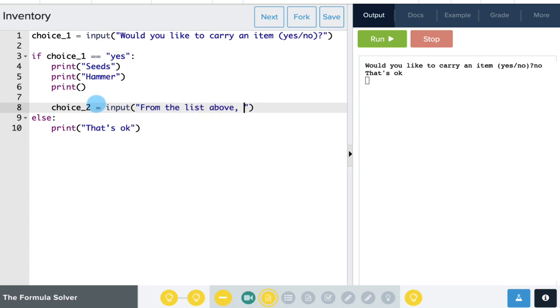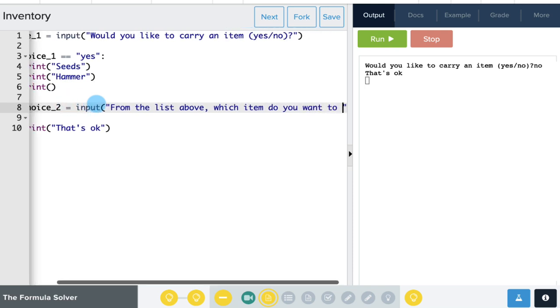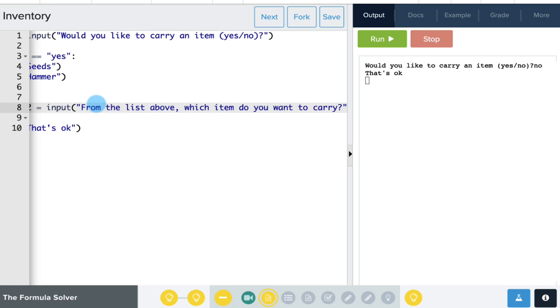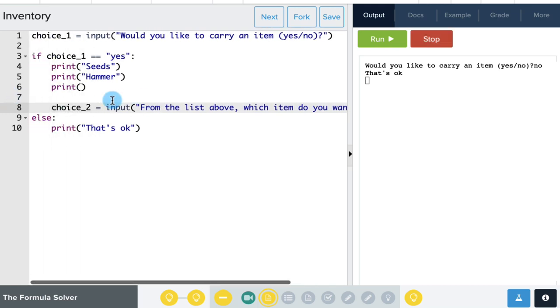So with choice two, the user will respond to the following question: From the list above, which item do you want to carry? Okay, so the user will then look at the list above, which is seeds and hammer, and we'll make a response.